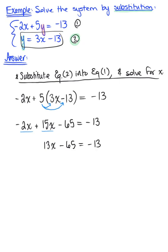Now we add 65 to both sides of our equation. Minus 65 plus 65 cancels out to zero, leaving us with 13x equals negative 13 plus 65, which gives us 52. Last but not least, isolate x.